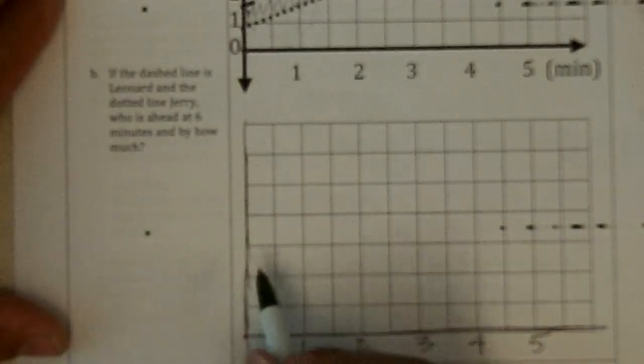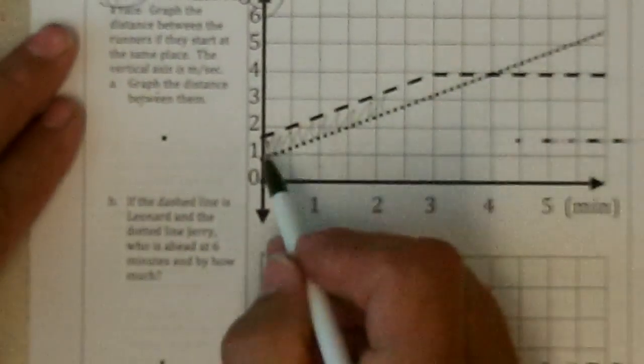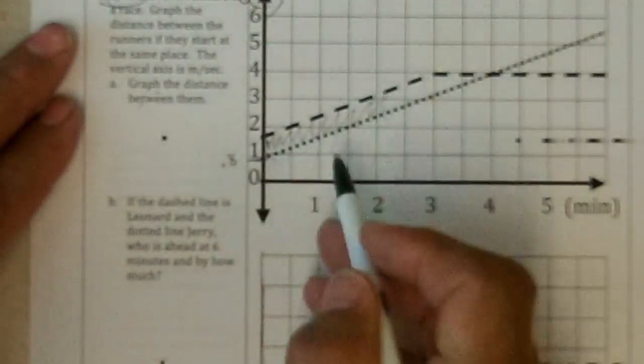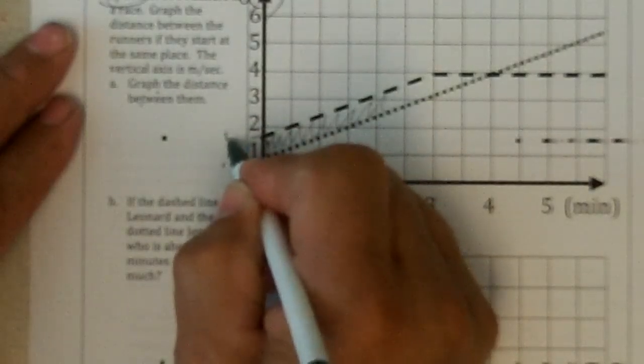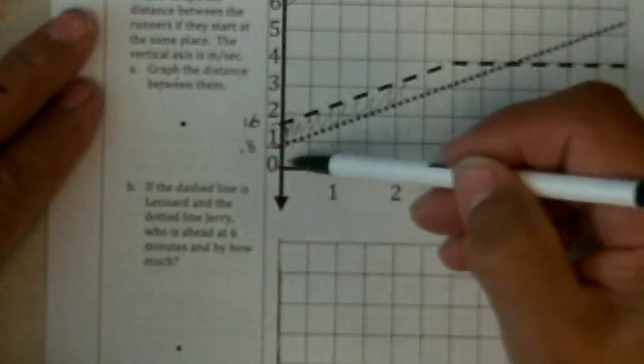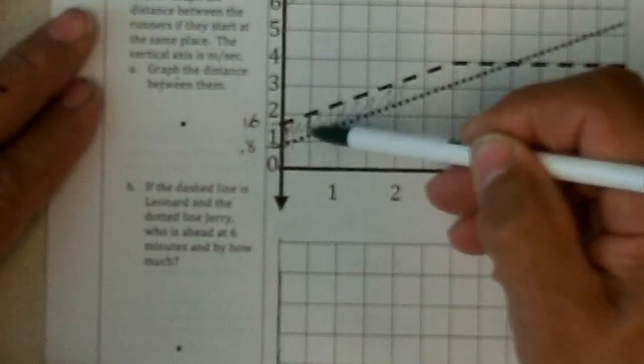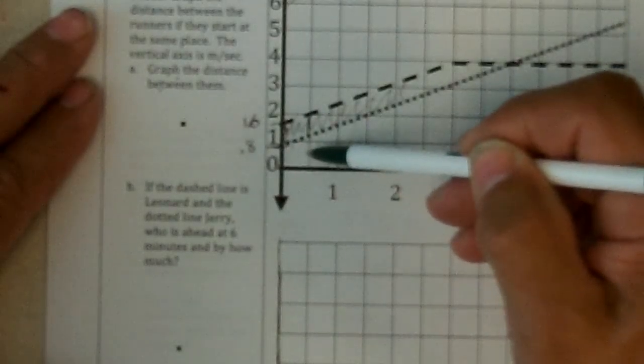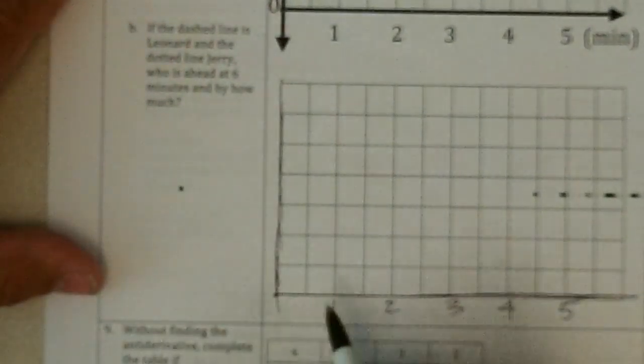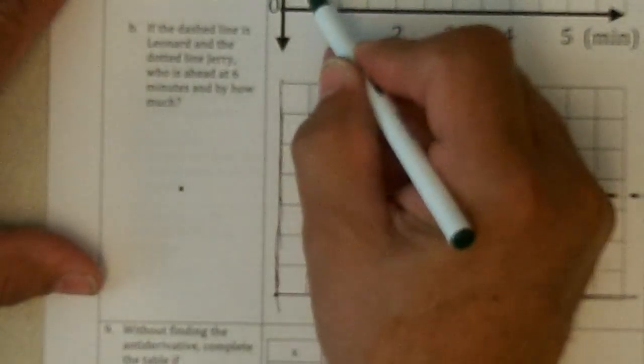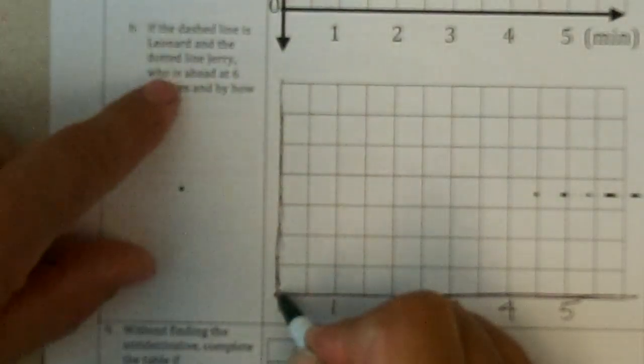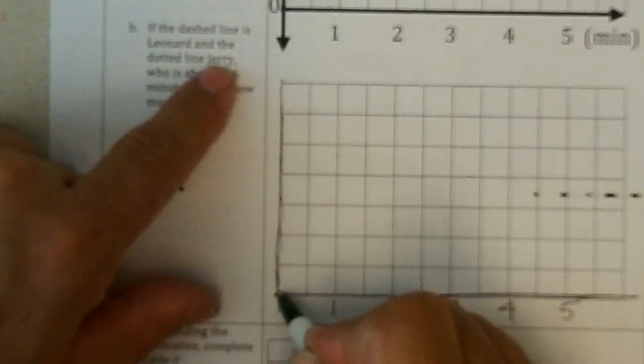So the distance between is the area here. Well, this one looks like it's starting at about 0.8 and this one's about 1.6. That's my estimation. So the difference is 0.8. And if I go just this far out to the half, I got a half times 0.8, which is 0.4. So one runner is going to get ahead of the other by 0.4. And the dashed line is Leonard and the dotted is Jerry.